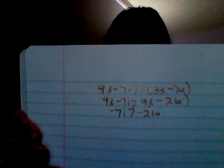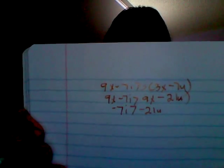Our last step is to isolate the variables. We'll be doing this by dividing 21 by 7. I really don't know what it is, but yeah, you get... okay. So it will be i is greater than 3u.